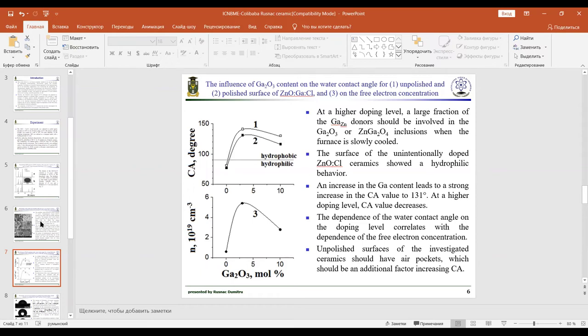An increase in the gallium content leads to a strong increase in the CA value to 141 degrees. Therefore, the surface of zinc oxide doped with gallium and co-doped with chlorine ceramics with a gallium content corresponding to the solubility limit becomes hydrophobic.